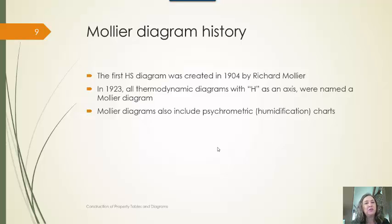The first H-S diagram was created in 1904 by a gentleman named Richard Mollier. These were found to be incredibly helpful to people, and so people started adopting it. In 1923 they decreed that any diagram that had H as an axis would be named a Mollier diagram.